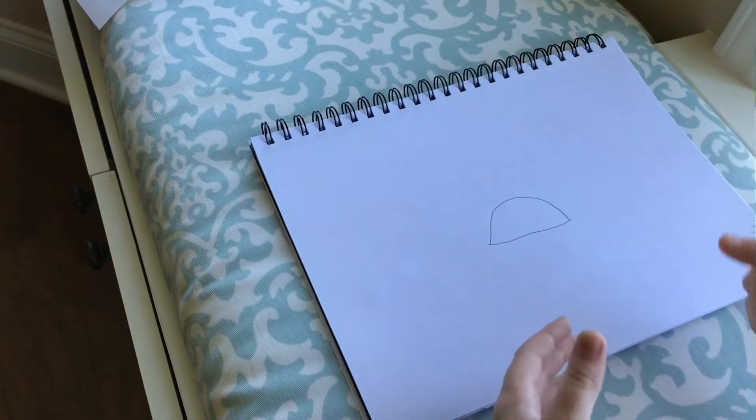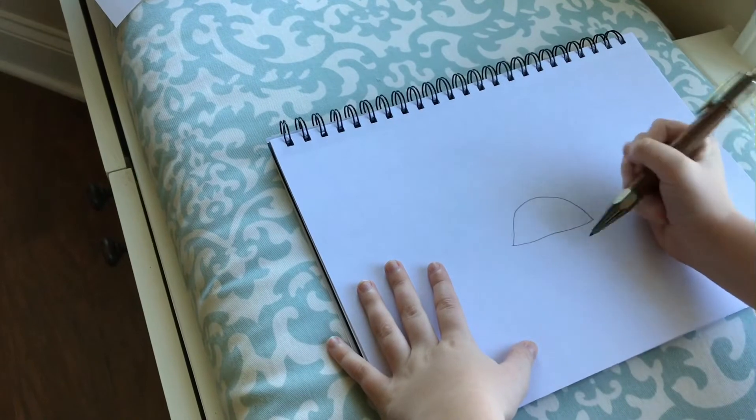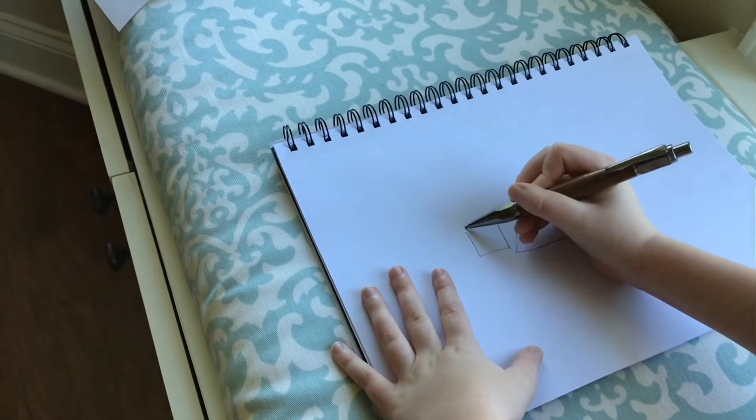So then you're gonna take a little square almost as big as the shell and make it right beside it.